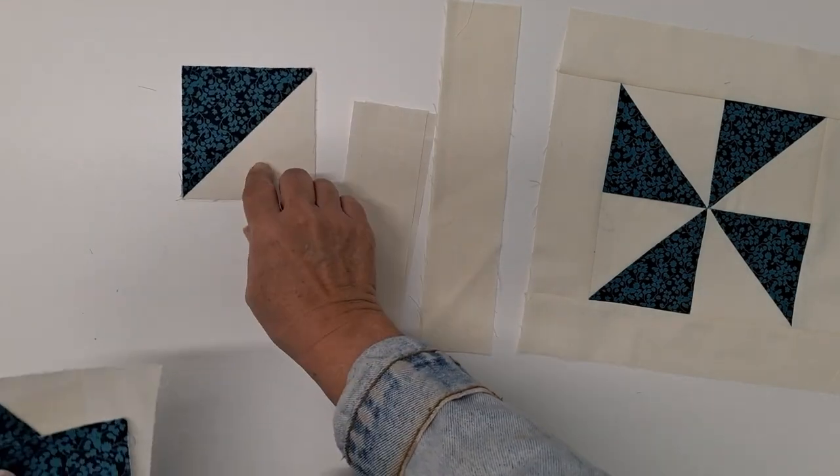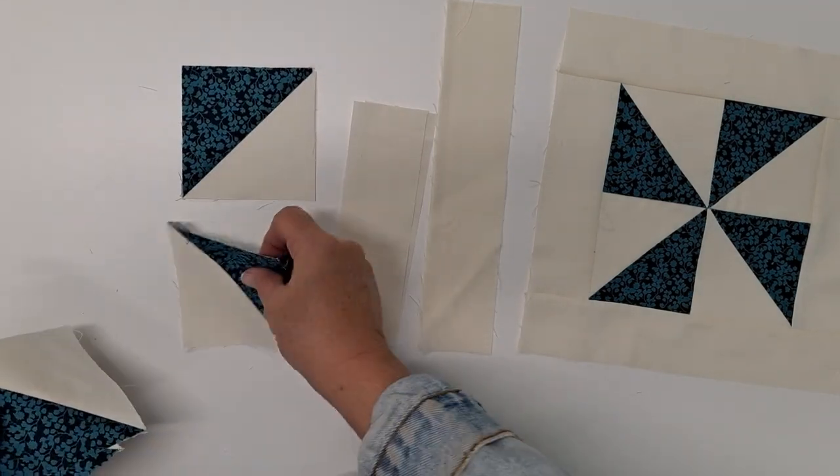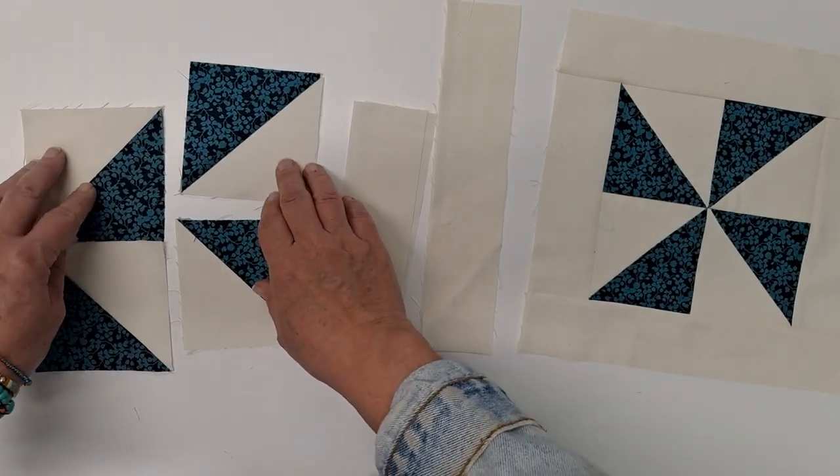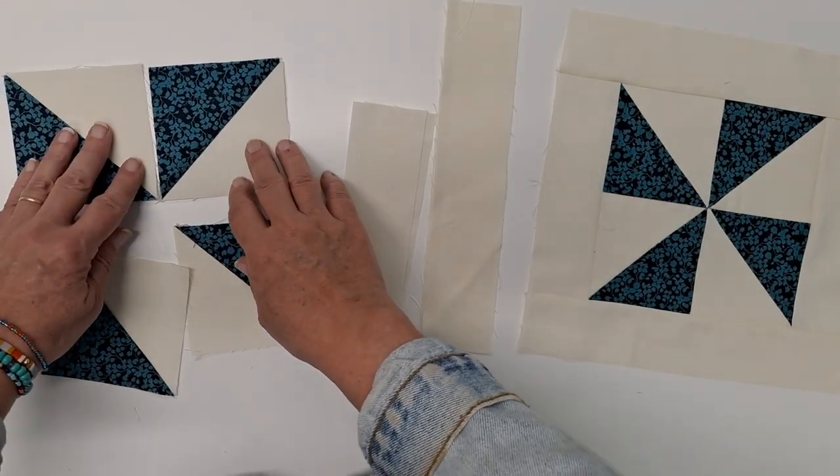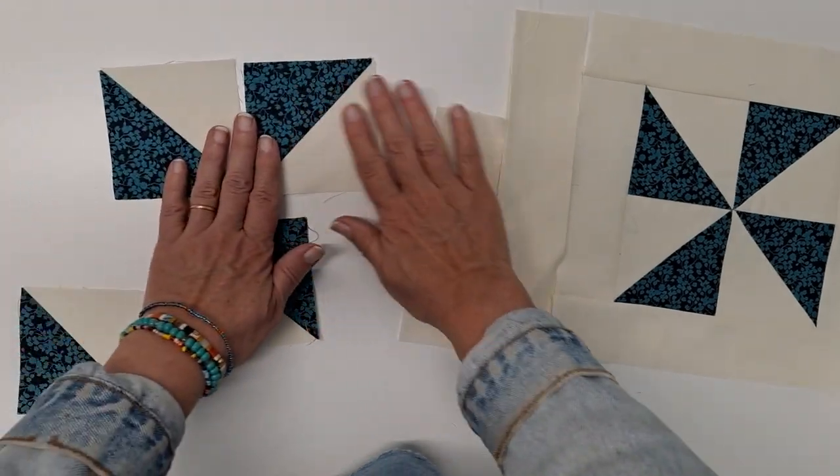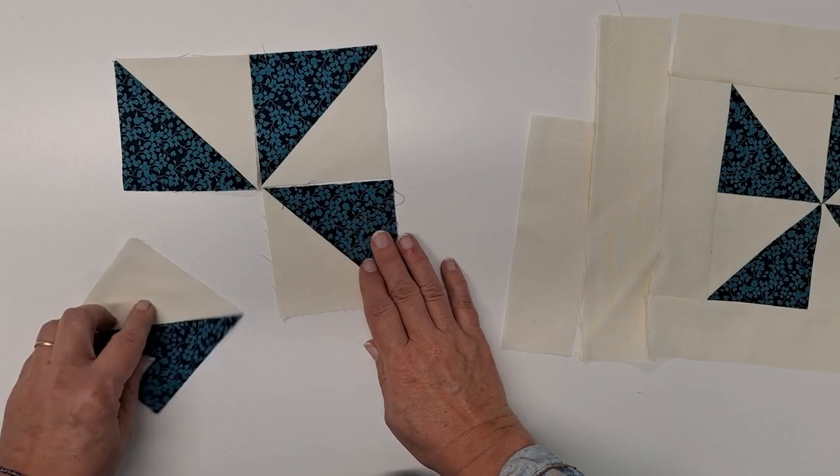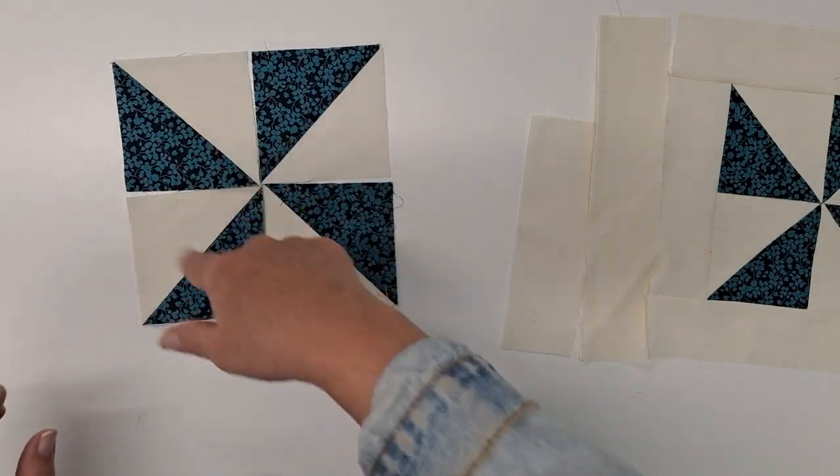You'll want three half-square triangle blocks that measure 3½ inches and finish at 3. We're going to arrange those into our pinwheel and sew that together.